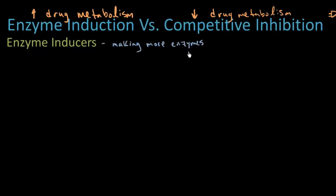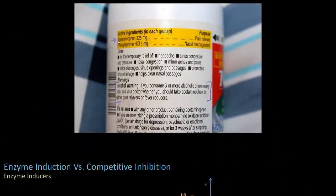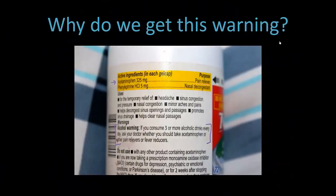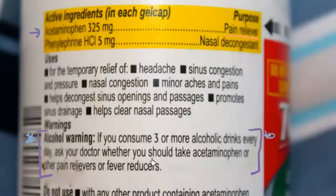The first example is chronic alcohol use and acetaminophen. Here's a bottle of Tylenol — acetaminophen is the active ingredient. There's an alcohol warning that reads: if you consume three or more alcoholic drinks every day, ask your doctor whether you should take acetaminophen or other pain relievers. This is a legitimate question a patient might bring to you, and that's what we're going to understand.